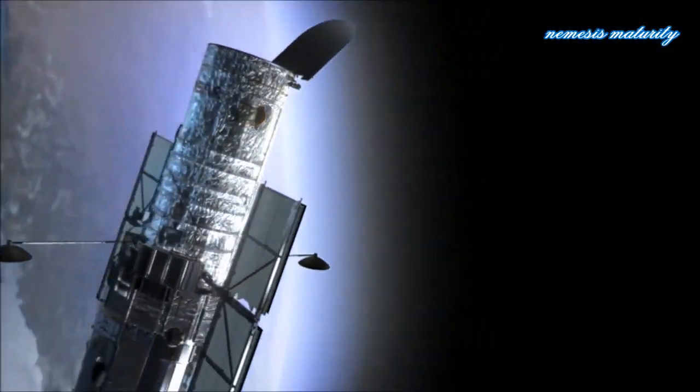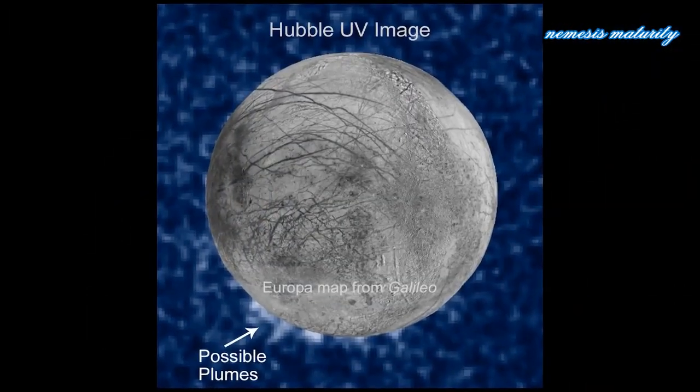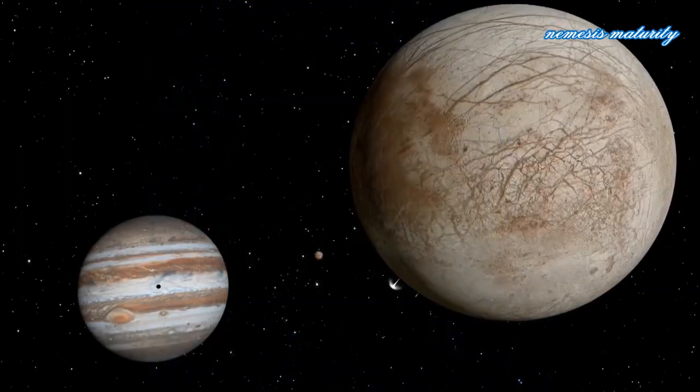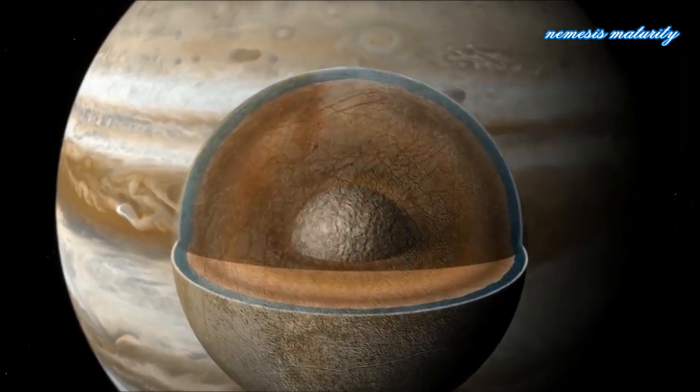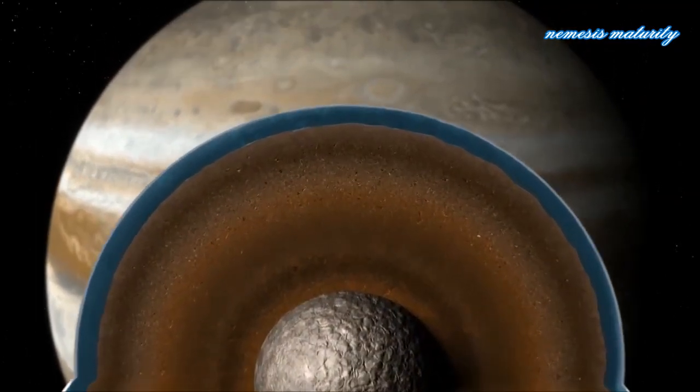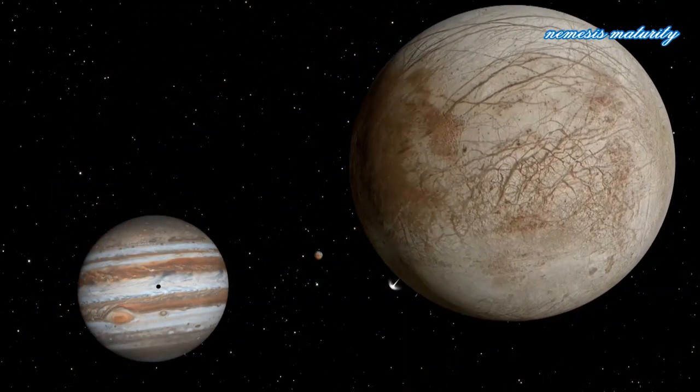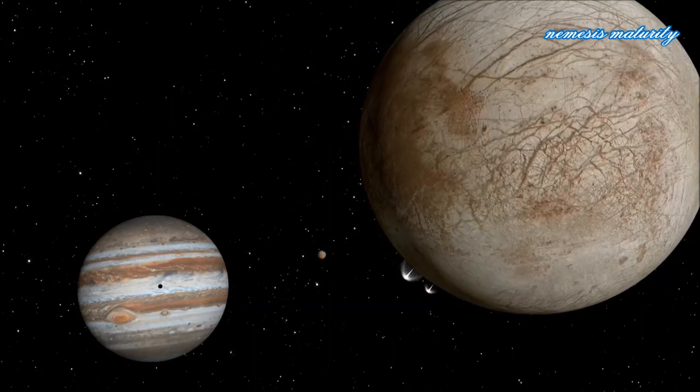NASA's Hubble Space Telescope has directly imaged what may be plumes of water vapor on Jupiter's icy moon Europa. Europa has long been thought to harbor a global ocean of water beneath its surface of ice, making it a prime target of study for anyone interested in searching for alien life.